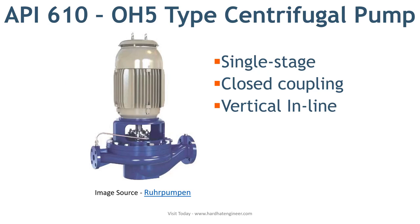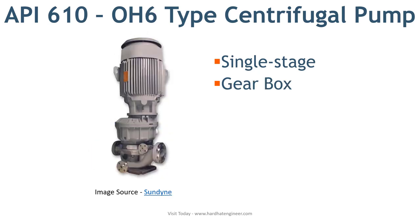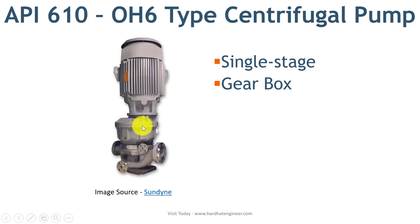Next is OH6 type pump. OH6 is a high speed pump as it uses an increasing gear box. The motor is directly connected with the gear box through flexible coupling and the impeller is mounted directly on the gear box shaft, making the pump speed very high. OH6 is also a single stage pump with overhung design and can be installed both vertically and horizontally.